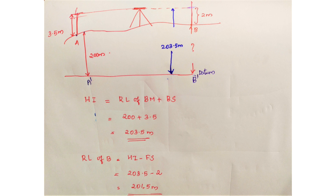We have the elevation of points B and N. We have points A and B, and the instrument is set in the middle of A and B. At staff A, we take a reading, and we also have readings at both A and B.